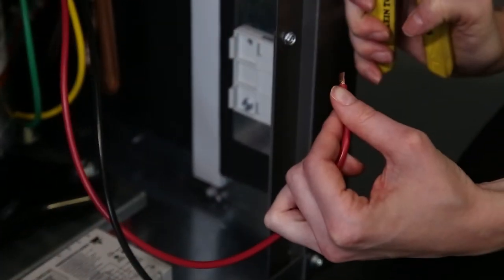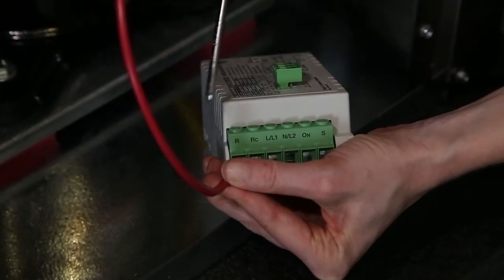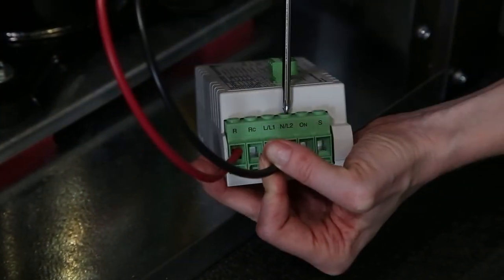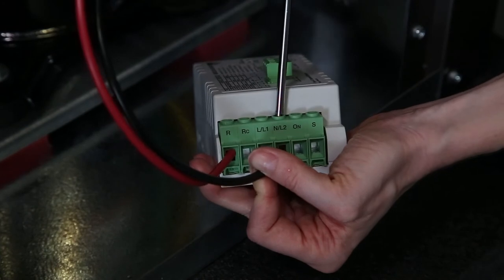Strip the ends of the remaining wire and connect the red wire to the R terminal on the soft start module and the black wire to the L2 terminal on the soft start module.